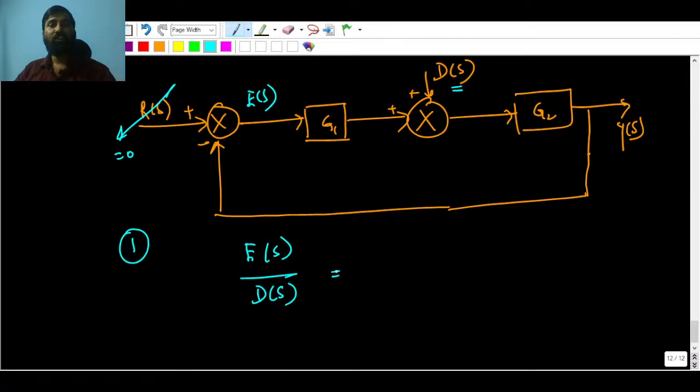Let me write the transfer function without drawing any kind of, again, without going for those 10 steps which you follow to calculate the overall gain or transfer function of the block diagram. You do not have to use block diagram reduction kind of thing. Let us go for Mason's gain formula.